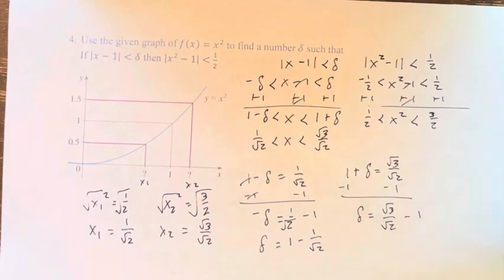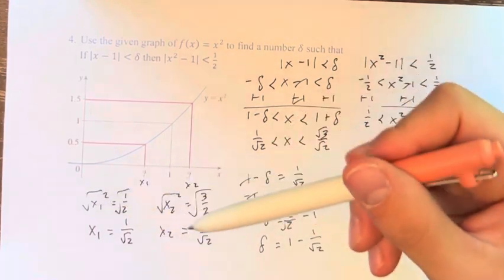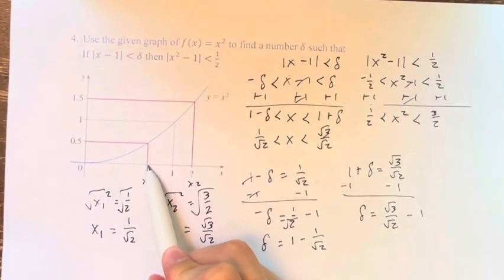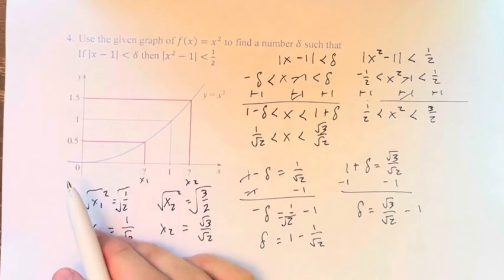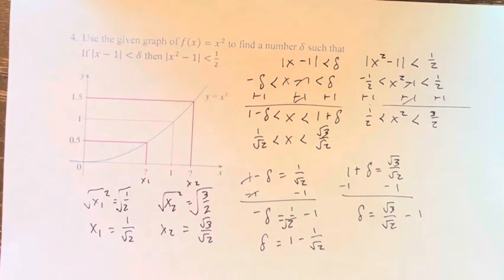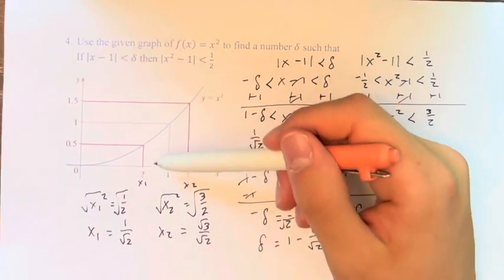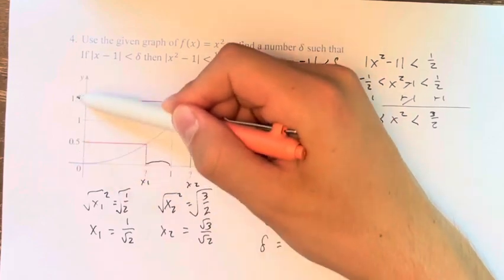The answer is that we have to pick the more restrictive delta. We have to pick the one such that this smaller value is further away from 1, because just graphically it looks like that. But that's not how you would actually go about solving it, but just for the sake of doing this, we look at which one looks further away. We say, okay, we go this far in this direction, and we're still within this range on the y-axis.